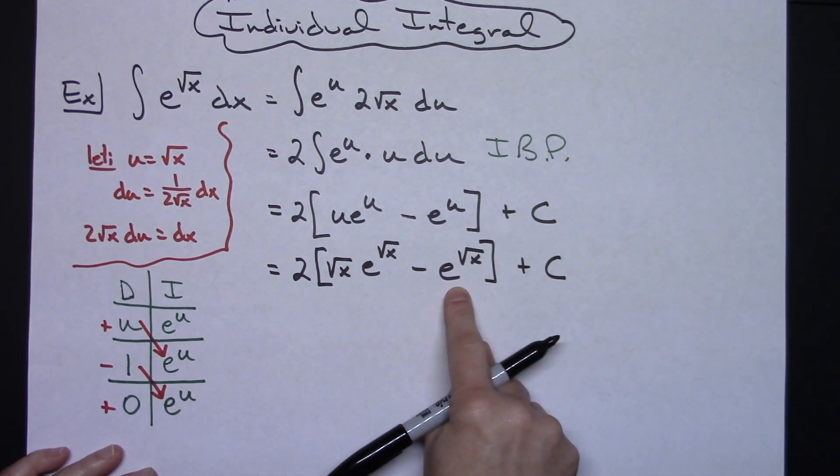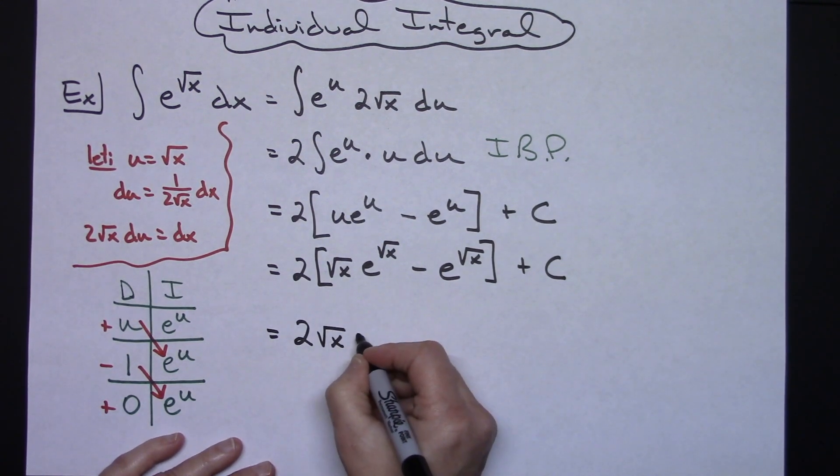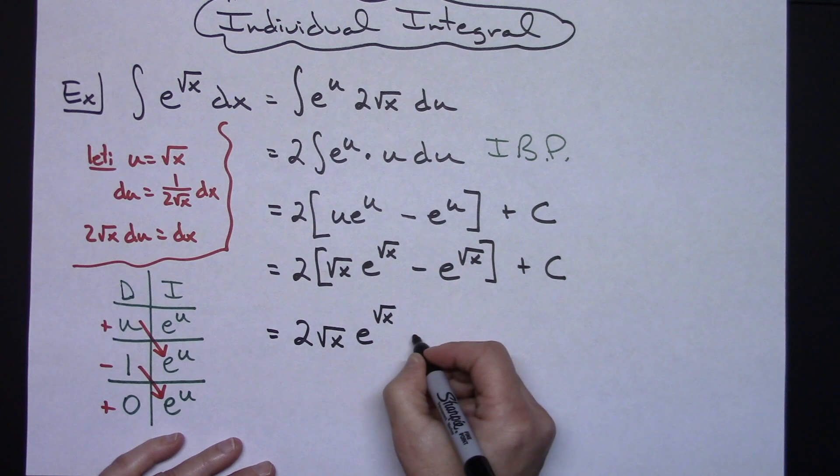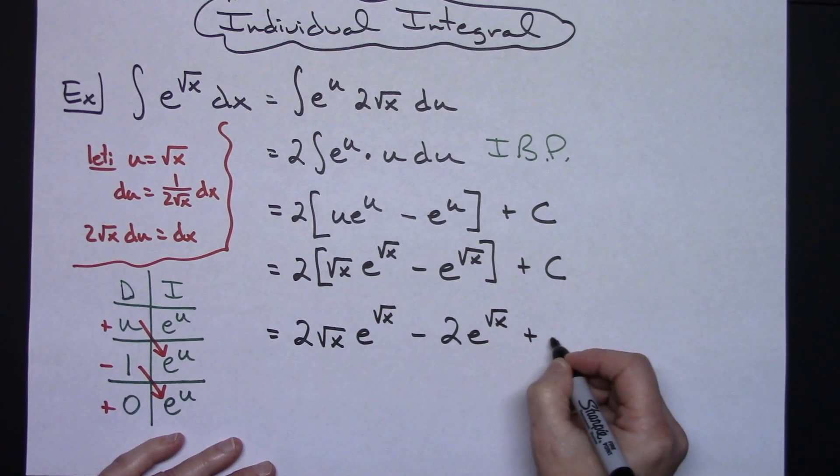The last thing would be to then distribute that 2. So we'll have 2 square root of x, e to the square root of x, minus 2 e to the square root of x, plus C.